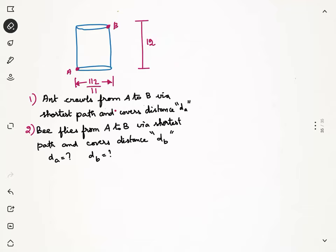Second question is a bee flies from A to B. Bee does not have to travel along the surface, bee can fly. It can take the inside volume of the cylinder. And if bee takes the shortest path along the flight from A to B and it covers a distance dB, what is that distance dB?